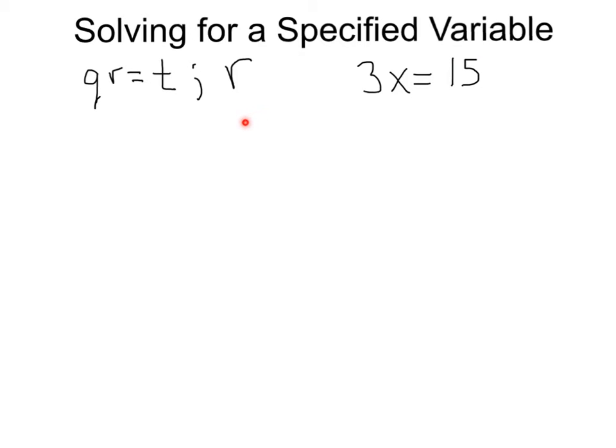Look at this first problem here. We have qr equals t, and they want us to solve for r. Now, you might be thinking, what, Mr. Zonker, there's no numbers. How am I supposed to solve a problem with no numbers?